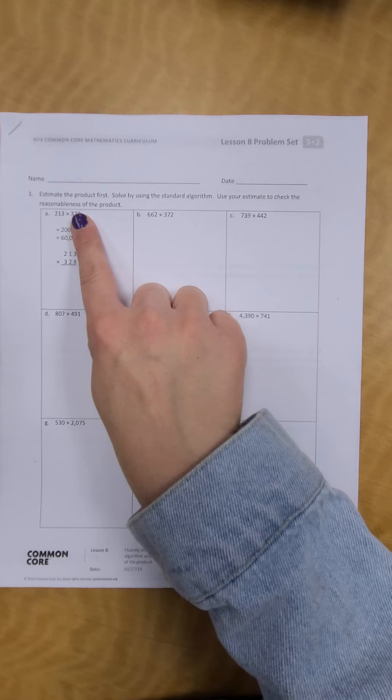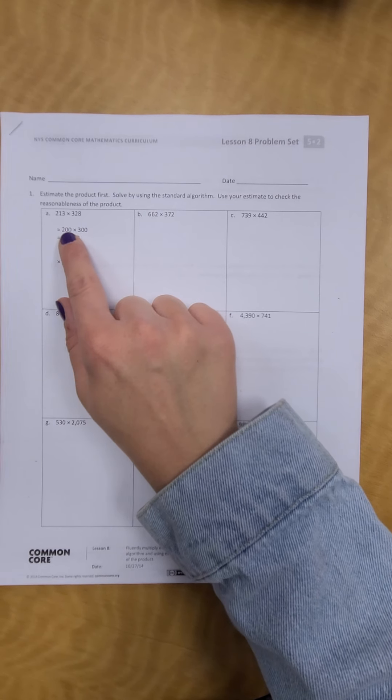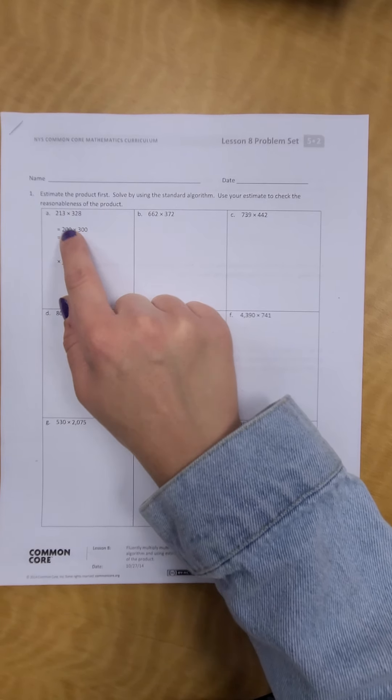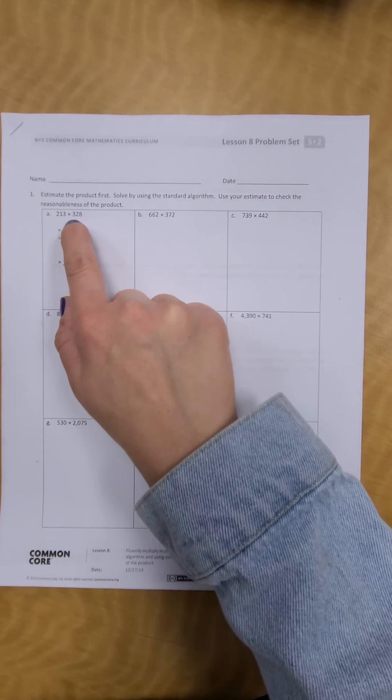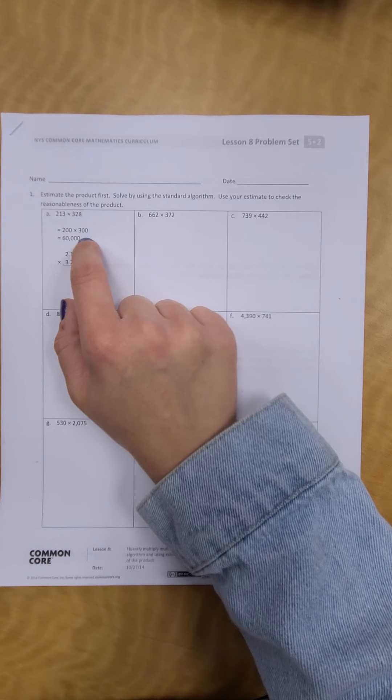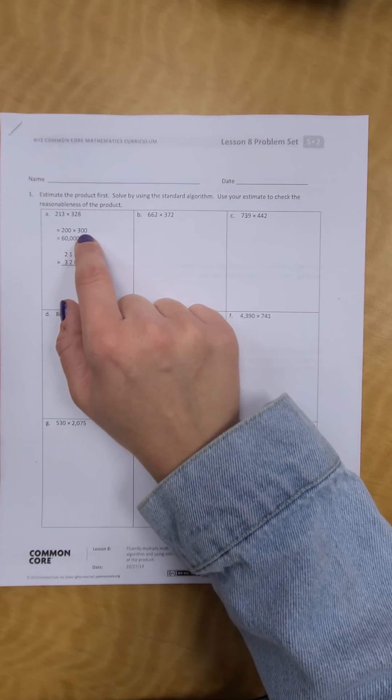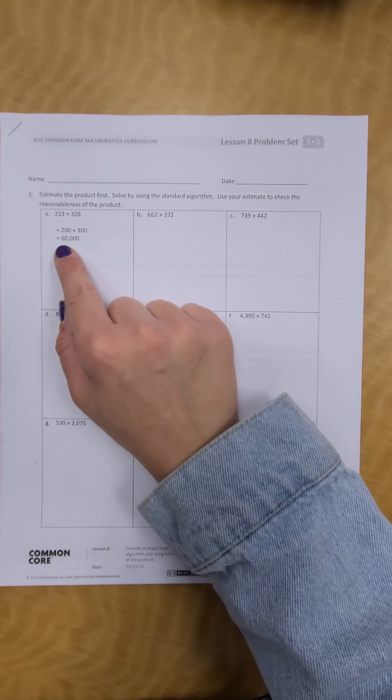So, with this one, the first thing they did is they rounded 213 and they found that the closest 100 would be 200. And they rounded 328 to 300. So, 200 times 300 would give you 60,000.